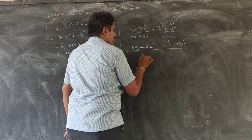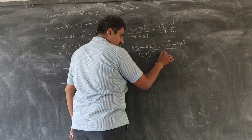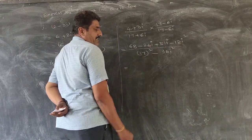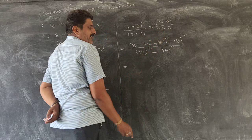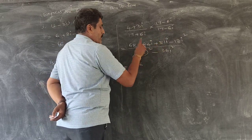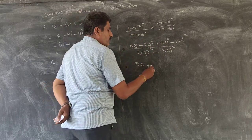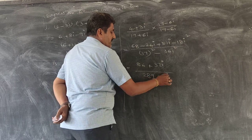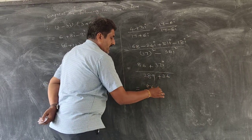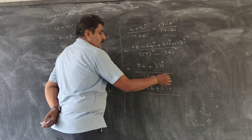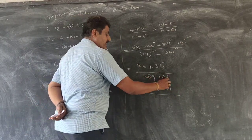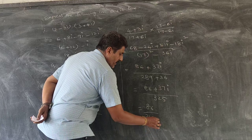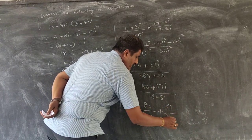The denominator is 17 squared minus 36i squared. Again i squared equals minus 1, so the numerator becomes 68 plus 18, which is 86, plus (51 minus 24)i, which is 37i. The denominator is 289 plus 36, which equals 325. So we get 86 plus 37i all over 325.